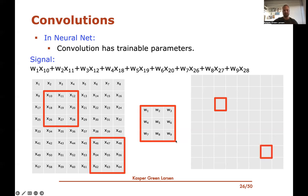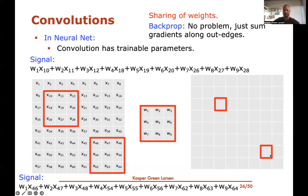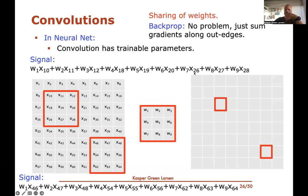The important difference from fully connected networks is that weights are shared — the same weights are used at different positions in the input. This is weight sharing across different pieces of the input. From backpropagation, we know these shared weights appear in multiple places, meaning multiple outgoing edges in the computation graph. We handle this by summing the partial derivative gradients along those edges — backpropagation still works.